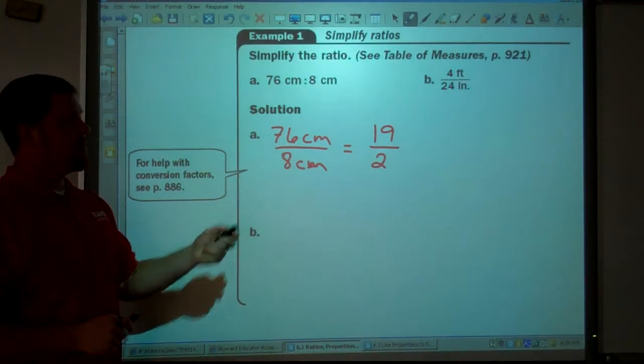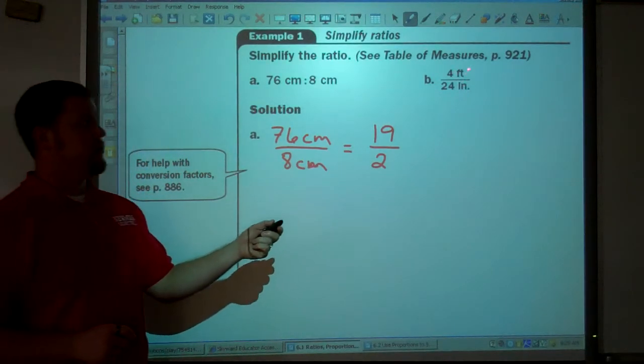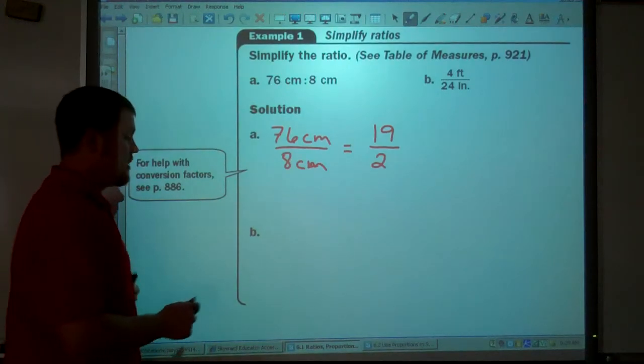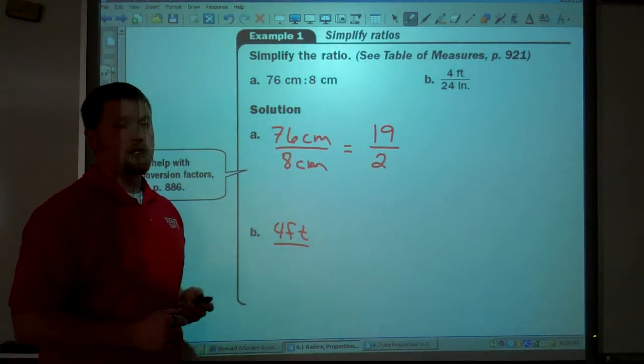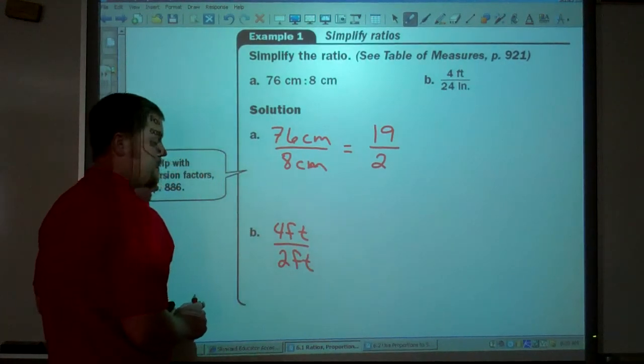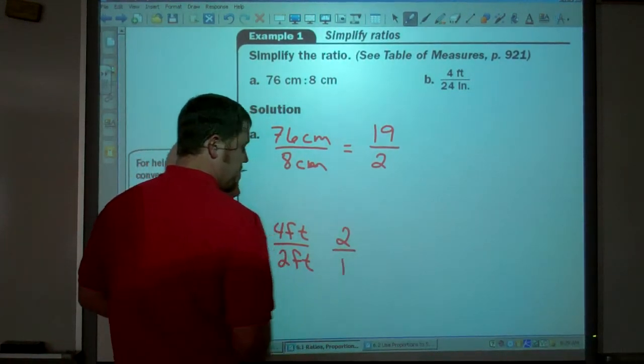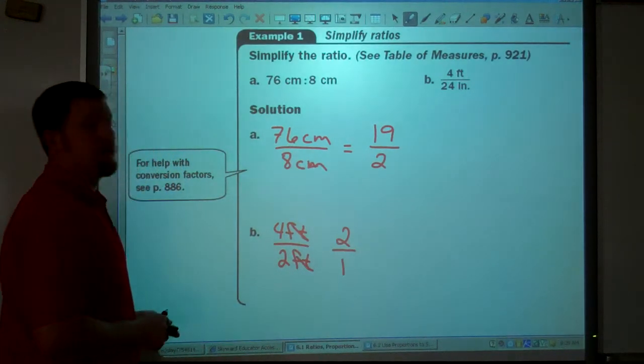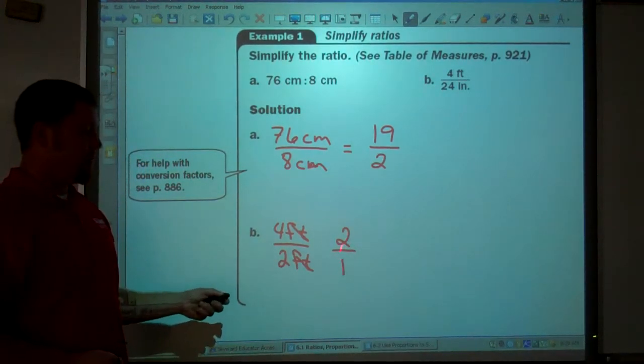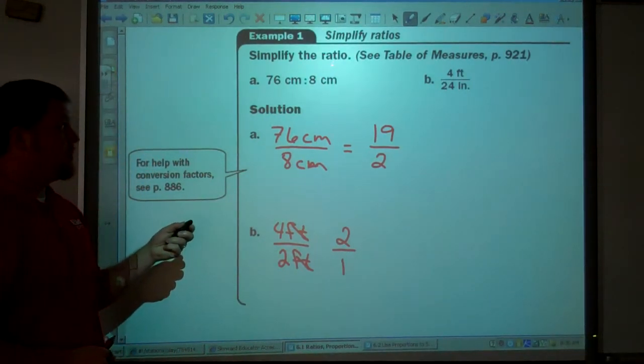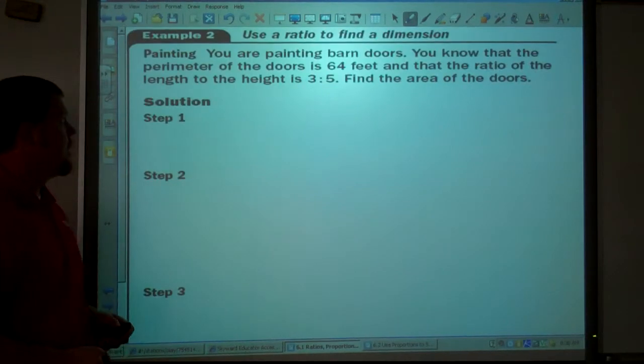Second one, 4 feet to 24 inches. So the very first thing, this one had like units. We're fine. We can just simplify it. This one does not have like units. 4 feet, 24 inches. We have to have like units. So we need to convert units. So 4 feet, I'm going to keep that one. And 24 inches, I can easily convert that to 2 feet. And 4 and 2 have a greatest common factor of 2. 4 divided by 2 is 2. 2 divided by 2 is 1. Feet divided by feet is 1. They cancel each other out. We're left with 2 to 1. And what's different about a ratio versus a fraction is when we have this number as a fraction, we just say it's 2. When we're talking about a ratio, simplify the ratio, it's 2 to 1.